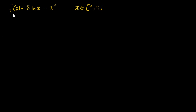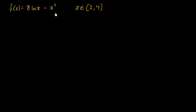Let's say that we've got the function f of x is equal to 8 times the natural log of x minus x squared, and it's defined over the closed interval between 1 and 4. It's a closed interval — it includes 1 and it includes 4. This is the domain of our function as we have defined it.